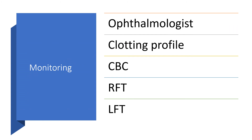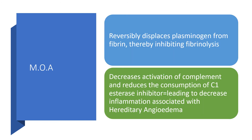Monitoring should include ophthalmology assessment, due to the risk of central retinal artery and vein occlusion and color vision loss. Clotting profile should be monitored for obvious reasons. A complete blood count is important if bleeding is present. Renal function tests are needed because dosing must be adjusted in renal impairment; the same applies to liver impairment.